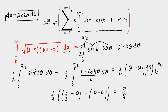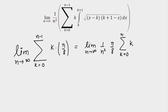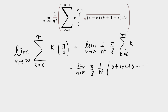Now let's tackle the summation. After substituting the integral value π/8, the expression becomes: limit as n→∞ of (π/8)·(1/n²)·Σ(k=0 to n−1) k. Opening the summation gives 0 + 1 + 2 + 3 + ... + (n−1).